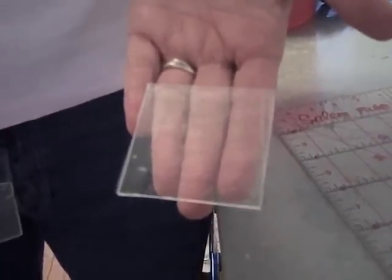So now I have a two and a quarter inch square of Plexiglas ready for stamp making. I'm done.